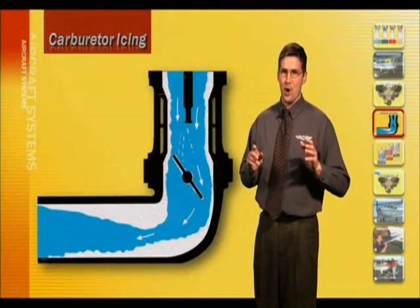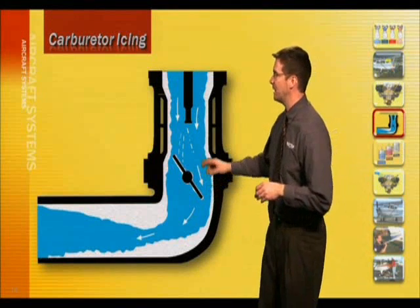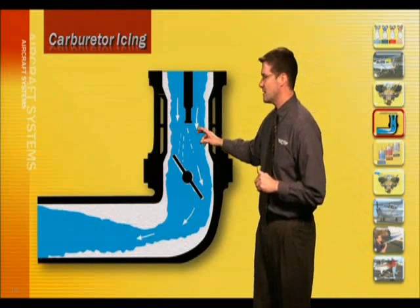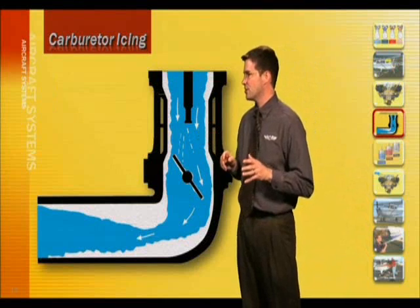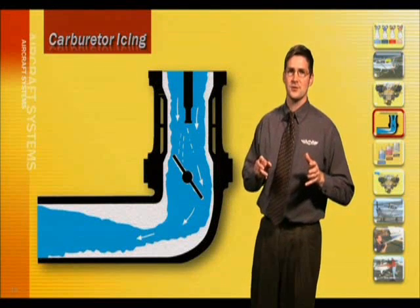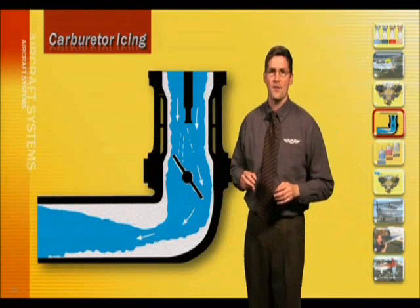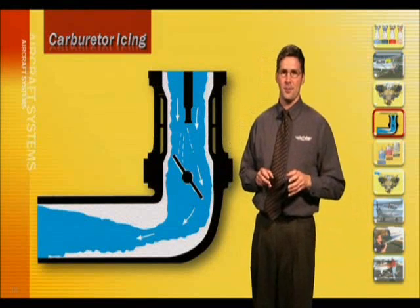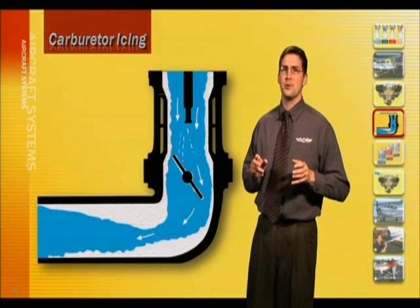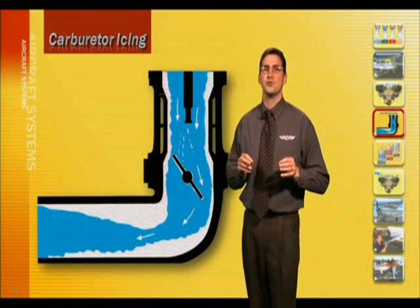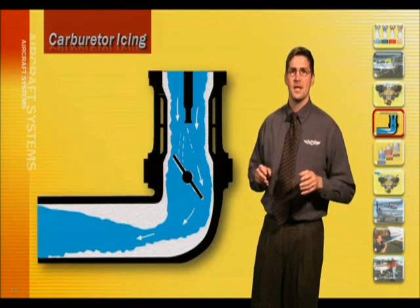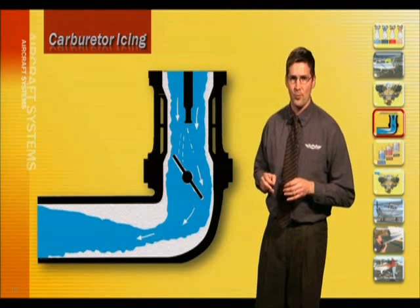A float-type carburetor is commonly found in many general aviation aircraft, and you see one right here. It operates by a differential air pressure present at the carburetor throat, also called the venturi. However, carburetors are not without problems. As the air flows through the venturi, the fuel vaporization can cause the temperature to drop by as much as 60 degrees Fahrenheit. This may cause a condition known as carburetor icing.